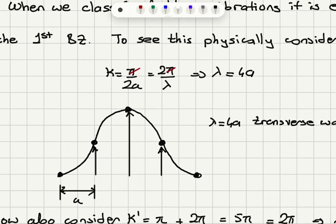Here I have 5 lattice points. The distance between the first one and the last one will be 4a. So I will have one full wavelength in this. If this is a transverse wave, we can start at a minimum, go to a maximum, and then go back to the minimum. So this is going to be one full wavelength.